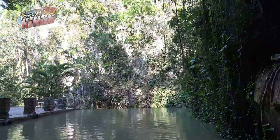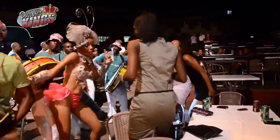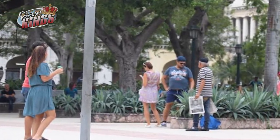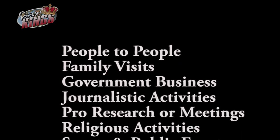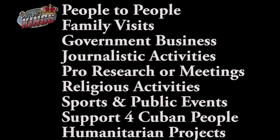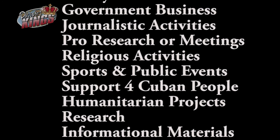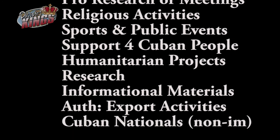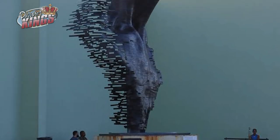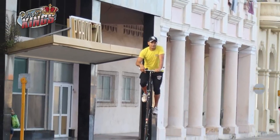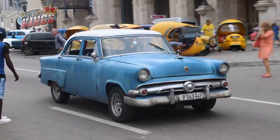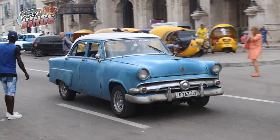The 13 categories are: 1. Educational Activities or People-to-People Exchanges; 2. Family Visits; 3. Official Government Business; 4. Journalistic Activity; 5. Professional Research or Meetings; 6. Religious Activities; 7. Sports and Public Events; 8. Support for Cuban People; 9. Humanitarian Projects; 10. Research; 11. Informational Materials; 12. Authorized Export Activities; 13. Non-immigrant Cuban Nationals. You will not qualify for a general license if the reason for your travel is not listed above, and you will be required to apply for a specific license from the U.S. Office of Foreign Assets Control. All license applications are reviewed on a case-by-case basis.